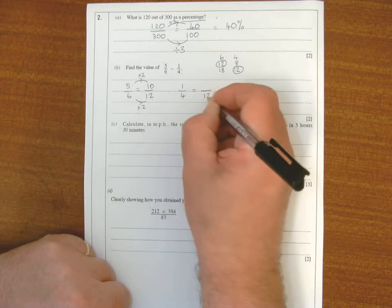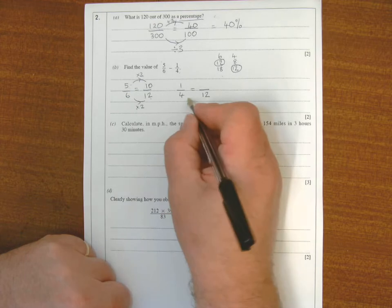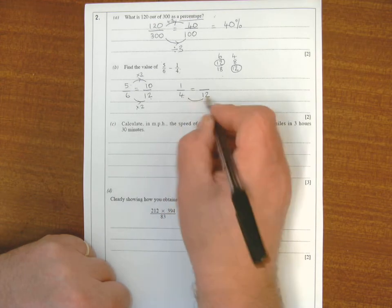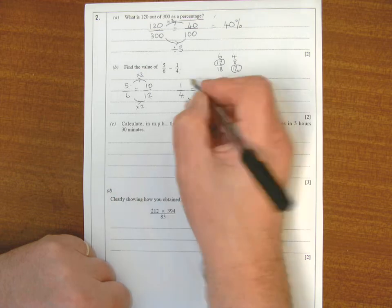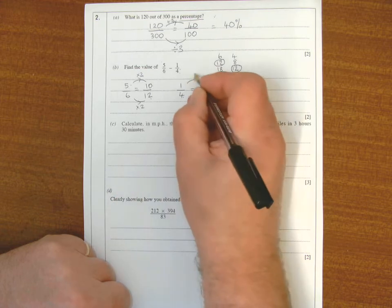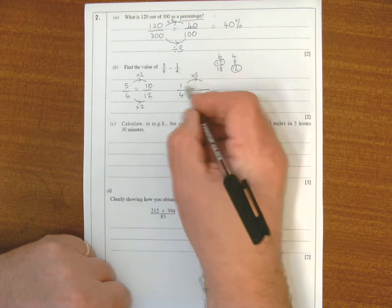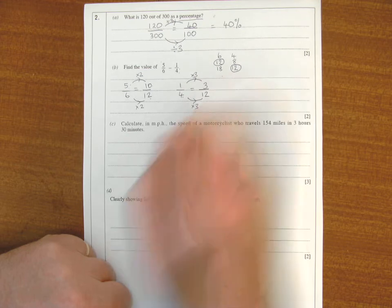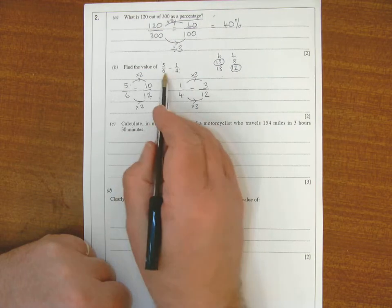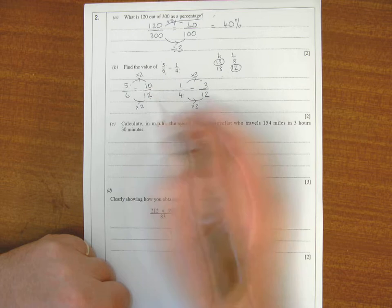Let's do the same for a quarter. That is going to be up to 12, so what have I done to the 4 to make 12? Times by 3. I do exactly the same to the 1, times by 3. 1 times 3 is 3. So I can rewrite the question now.